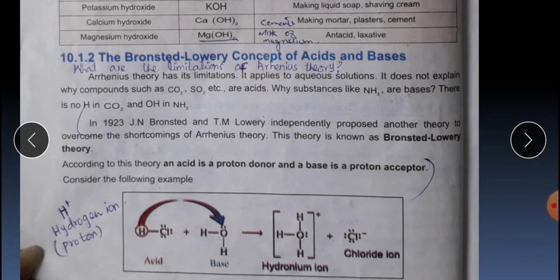Arrhenius's concept was useful but there were some substances for which it was not applicable. For example, carbon dioxide and sulfur dioxide show the properties of acids, but Arrhenius's concept requires H⁺ production — yet you can see these molecules have no hydrogen, so how can they produce H⁺? Similarly, ammonia NH₃ is a base, but according to Arrhenius's concept, a base must produce OH⁻ — yet ammonia cannot produce OH⁻ because it has no oxygen. These are the shortcomings of Arrhenius's concept.